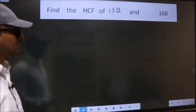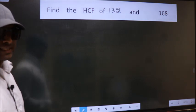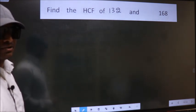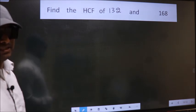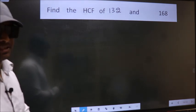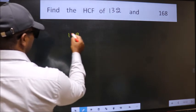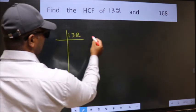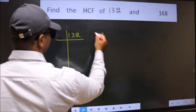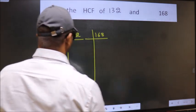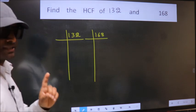Find the HCF of 132 and 168. To find the HCF, we should do the prime factorization of each number separately. What I mean is, 132 and 168. This is your step 1.